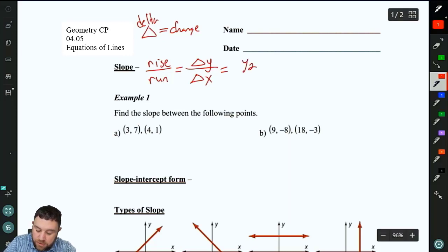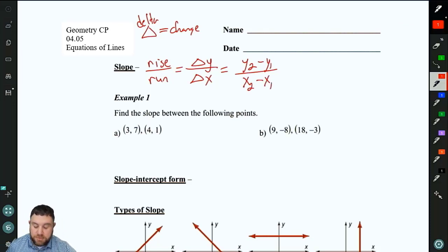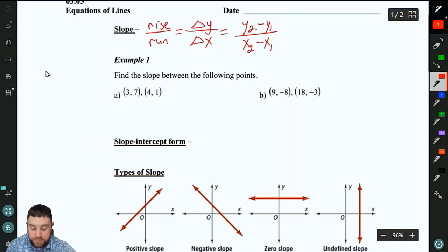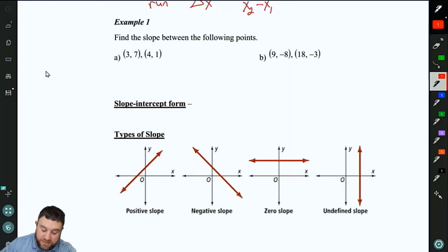Then we also have the slope formula, and we reviewed this at the beginning of the semester. Y2 minus y1 over x2 minus x1. So all of those can help you find slope. We're not going to spend a lot of time on this. Like I said, it's review. So let's go ahead and dive in.